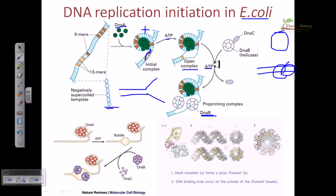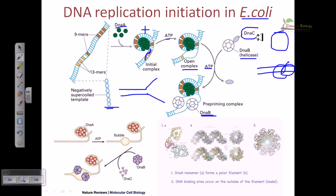Right after formation of the open complex, a large amount of ATP is consumed to load the DNA helicase, or DNA B protein, onto the open complex. Another important accessory protein required for this step is DNA C. DNA C helps utilize ATP to drag DNA B onto the open complex of the DNA.